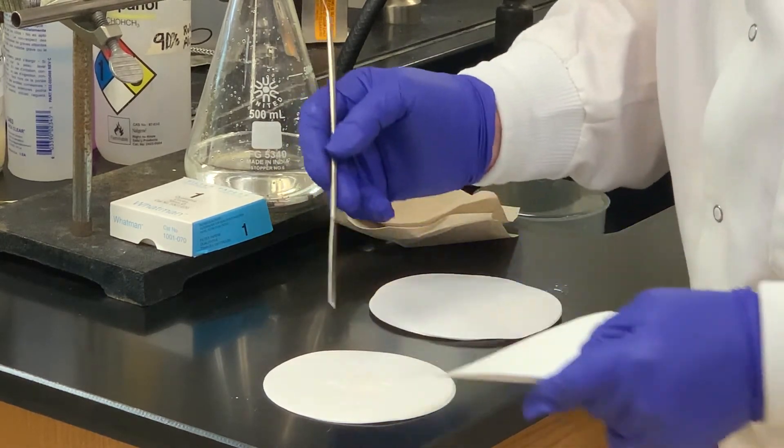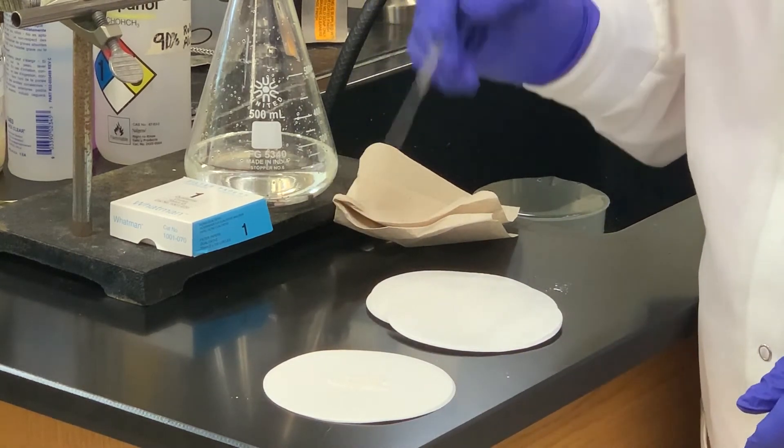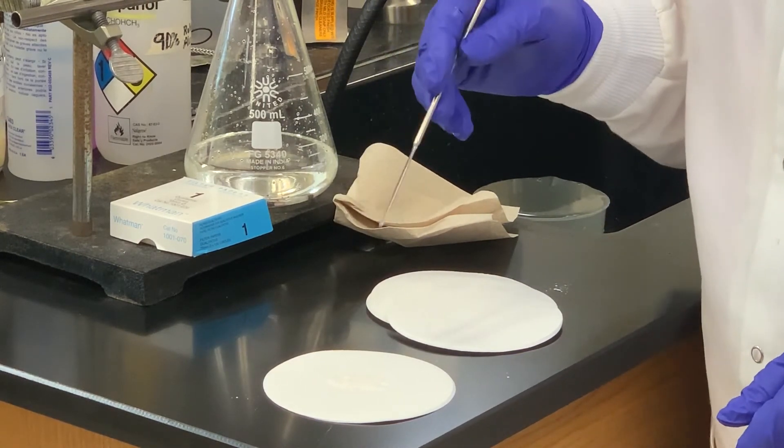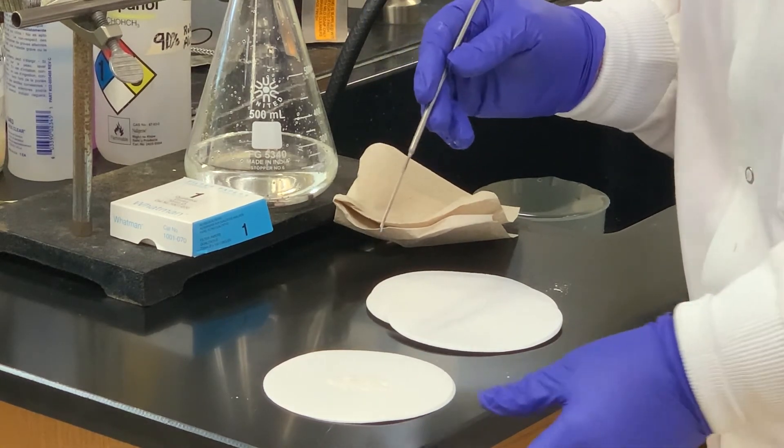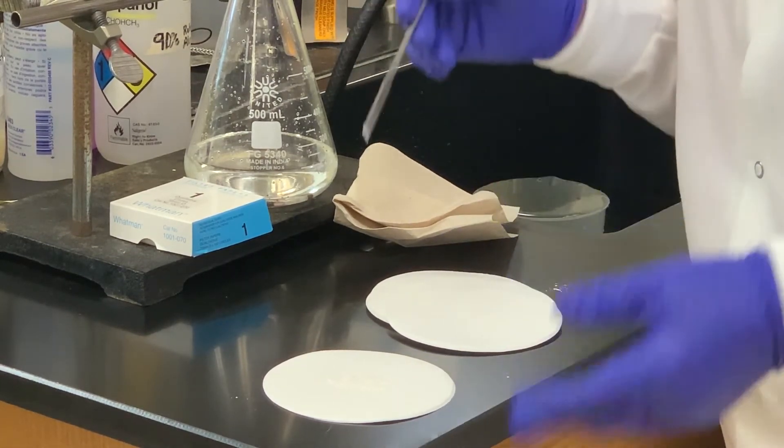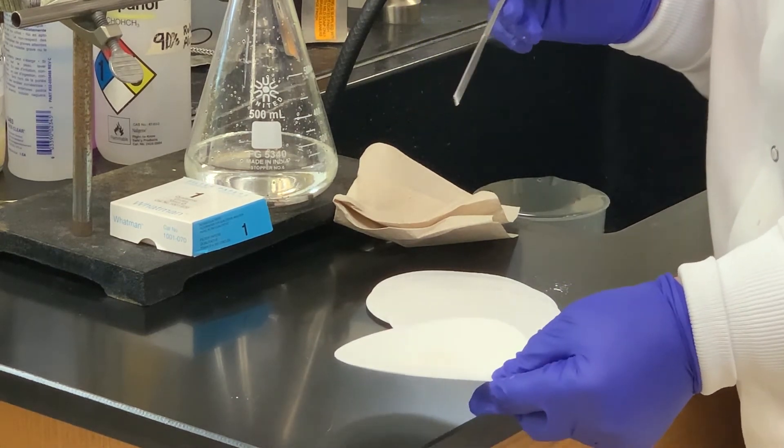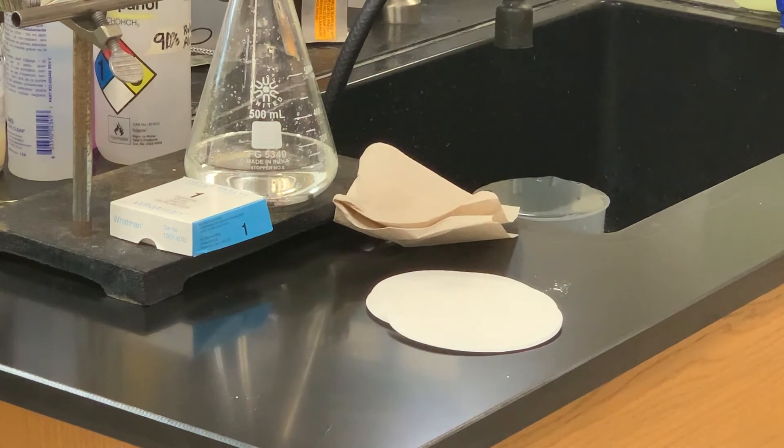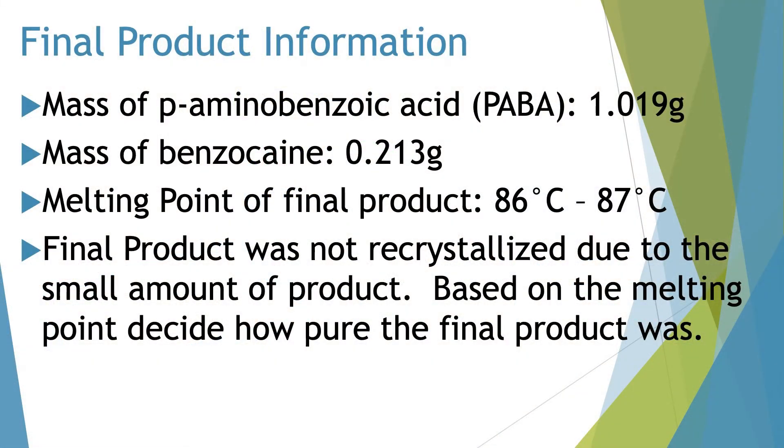I think that's pretty good. And what I'll do is I'll take this over to the balance, get a weight, and we'll do a melting point. And from there, you will record or calculate your theoretical yield and percent yield and match it up to how pure the product should be in terms of its melting point.